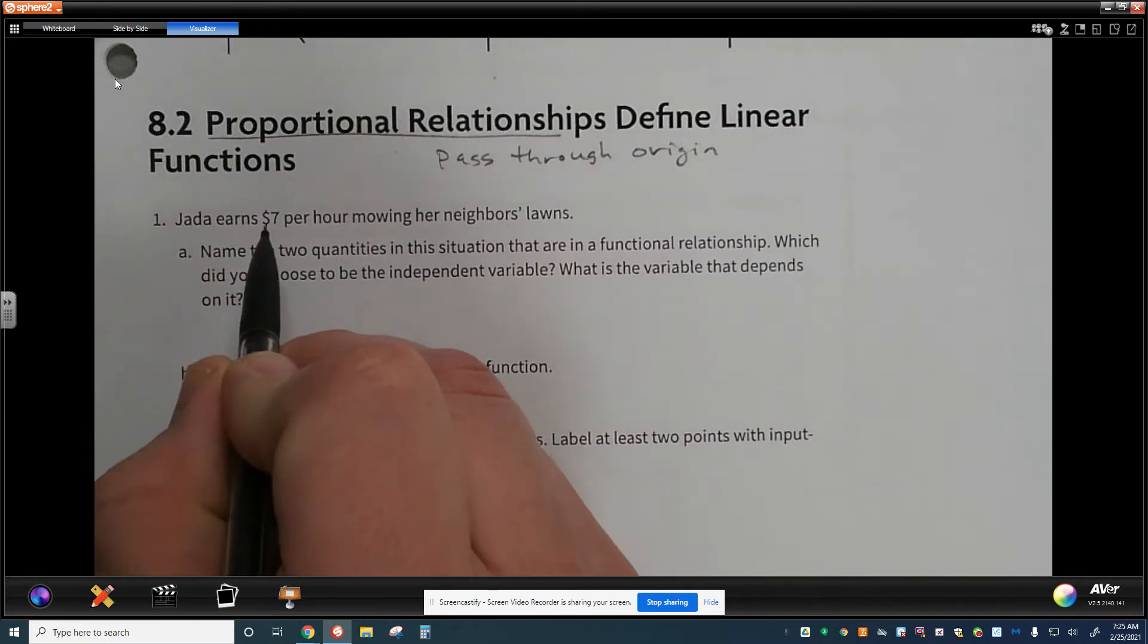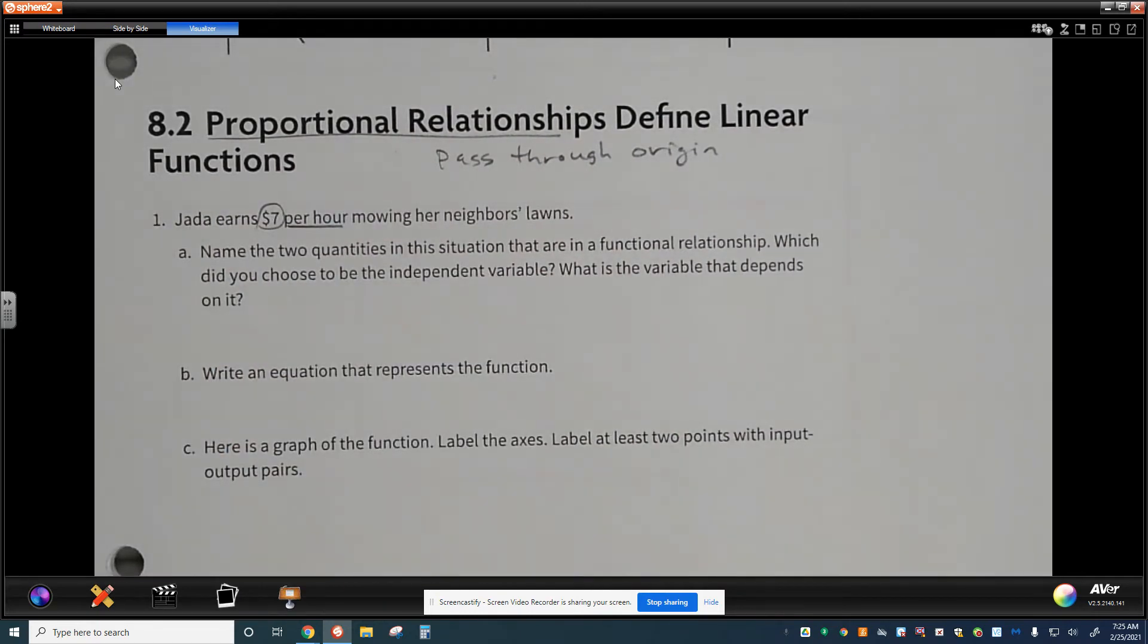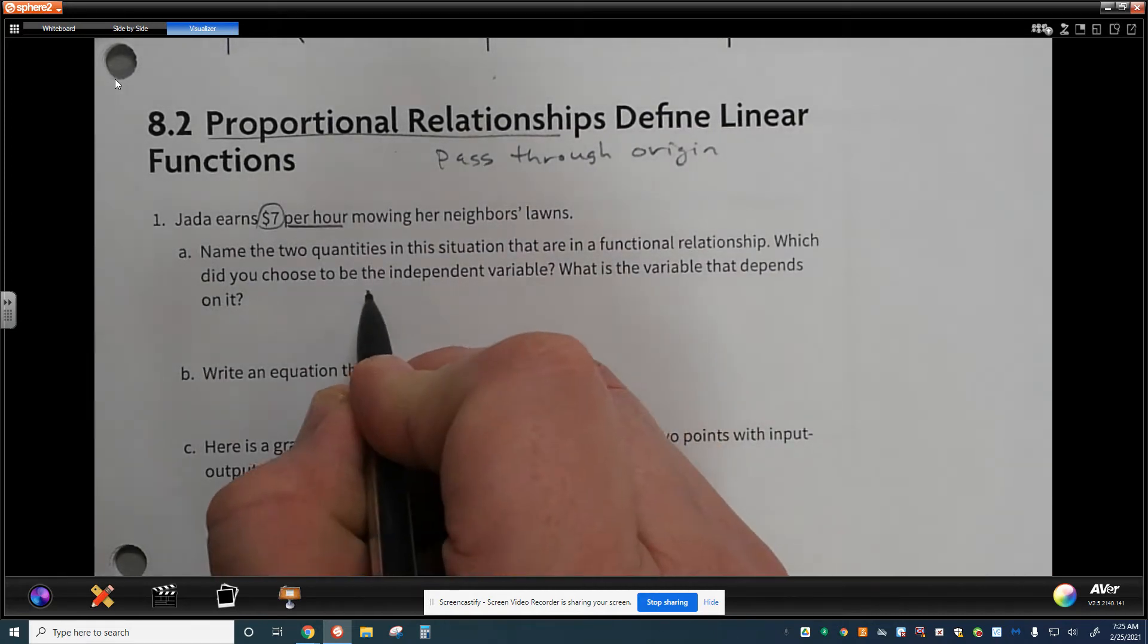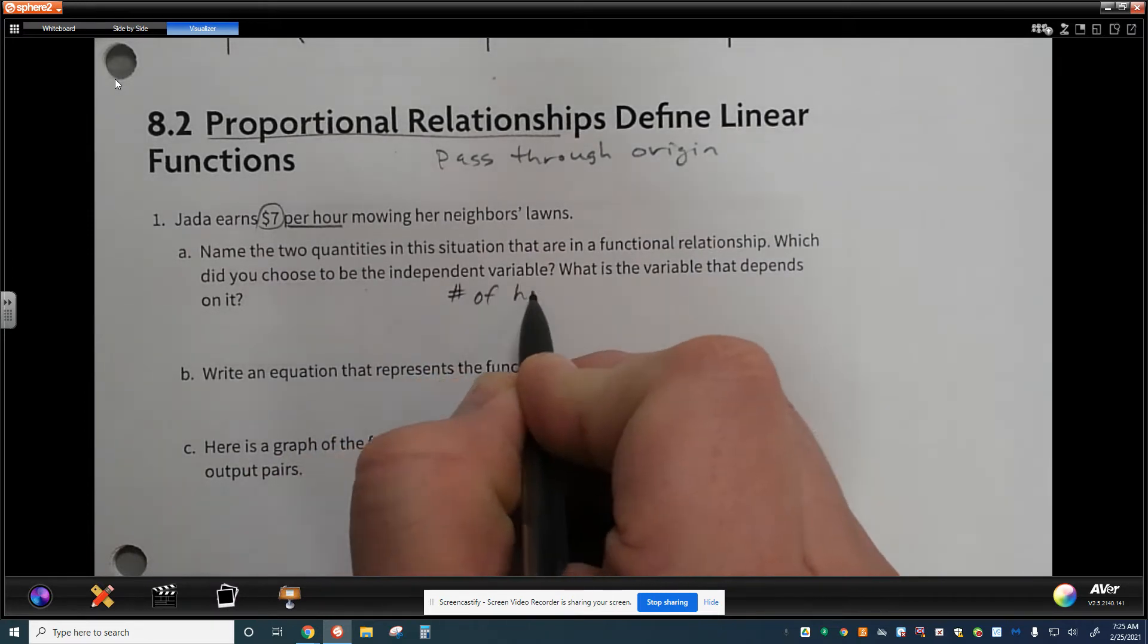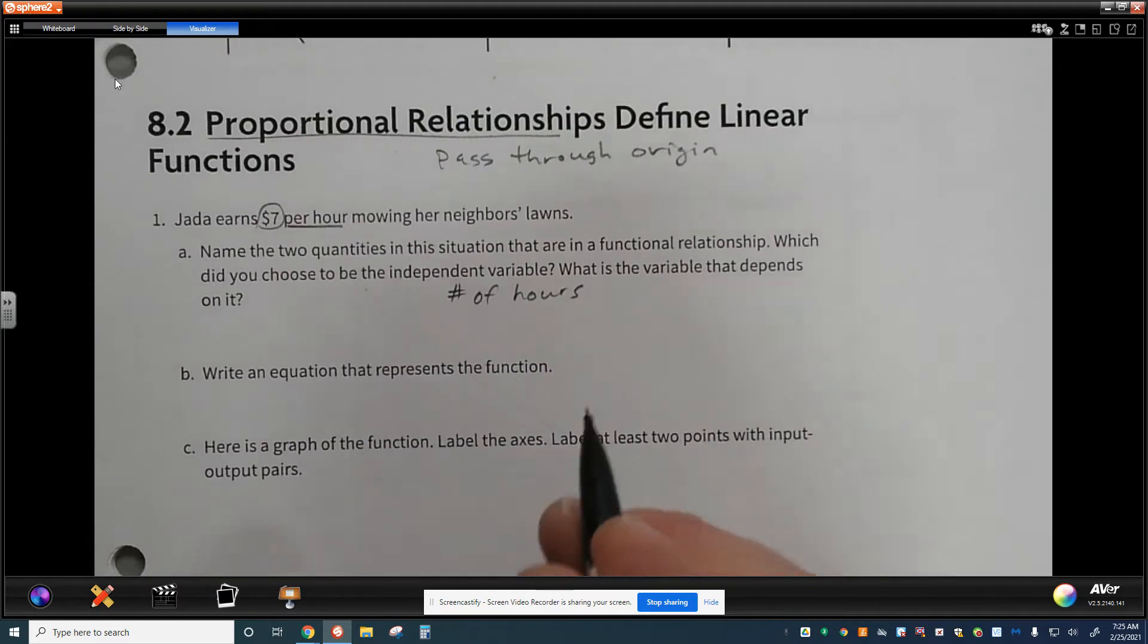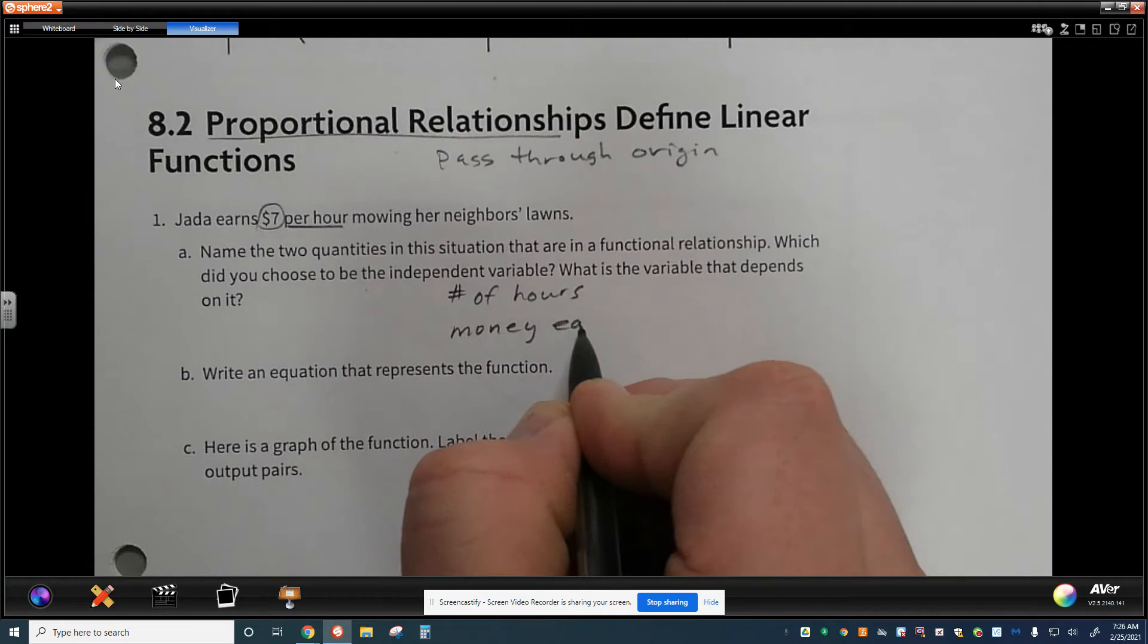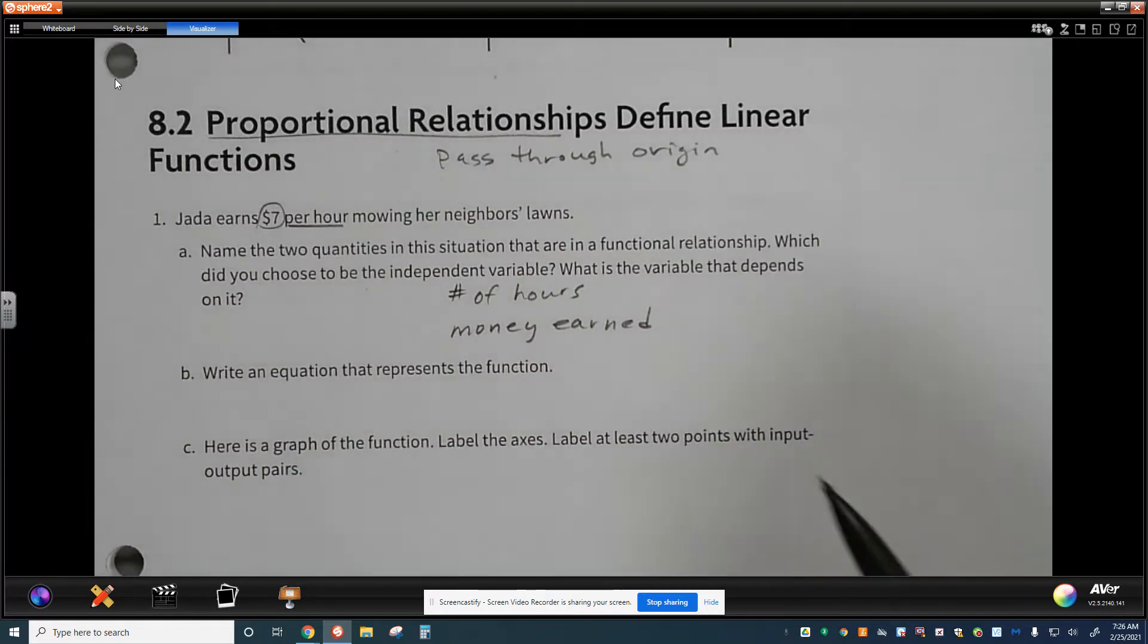Well, if we're looking at this, Jada is earning $7 every single hour. And with that kind of information, I would wonder how many hours is Jada actually mowing for? And then the other thing I wonder about is how much money did she earn? And with those two factors, those are a couple of, I wonder what's going on here and how much of which they are. Because they can change all the way through. And so these are my two quantities that I want to focus on in this situation.